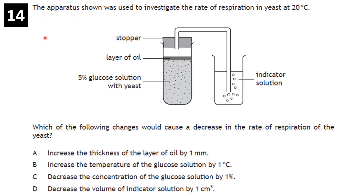Question on yeast respiration at 20°C: which change would decrease the rate of respiration? Decreasing the concentration of the glucose solution by 1% would do it, because there is less glucose to be broken down by the yeast, resulting in a reduced rate of reaction.